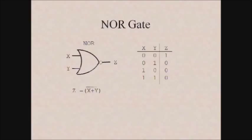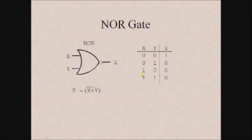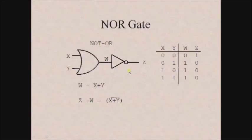The NOR gate again accepts more than one input and provides only one output. For a two-input NOR gate, x and y are inputs and z is the output. The NOR gate is a combination of OR gate and NOT gate, as indicated by the bubble. The output expression is z equals x plus y whole complement. The truth table shows it performs the inverse operation of the OR gate: if any input is 1 the output is 0, and only if all inputs are 0 the output is 1. NOT plus OR gives a NOR gate.